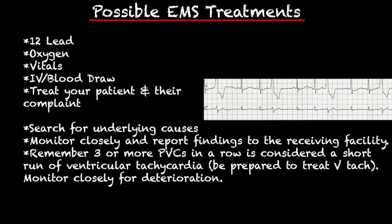Remember, three or more PVCs in a row is considered a short run of ventricular tachycardia. With these patients, you just want to monitor closely for patient deterioration, because a patient can go from having one or two PVCs, to a short run of V-tac, to several short runs of V-tac, into full-on V-tac. You just never know.